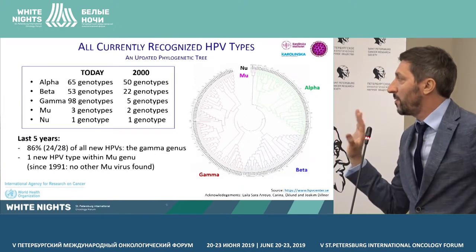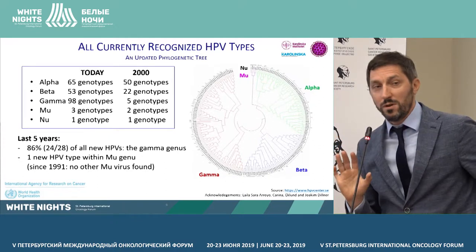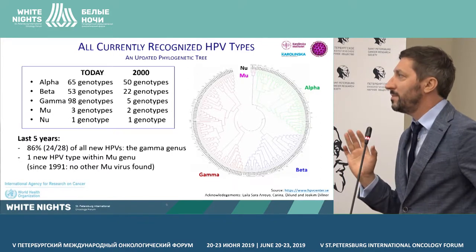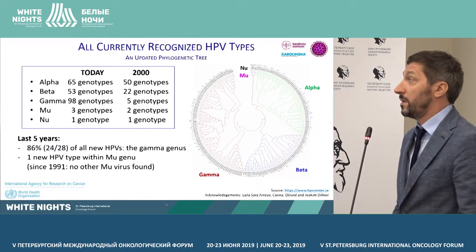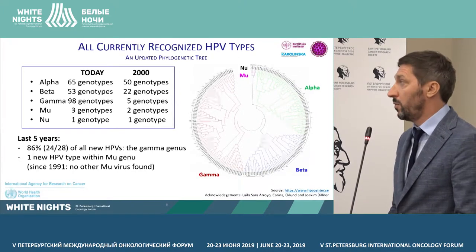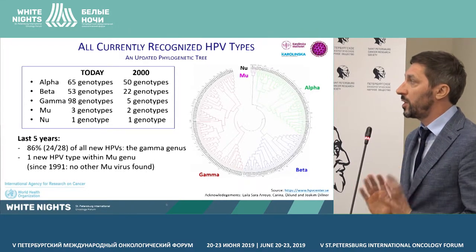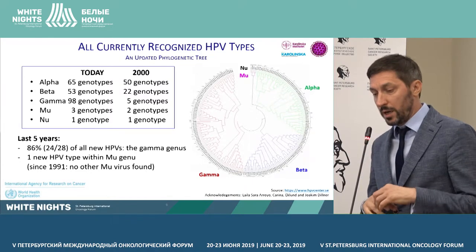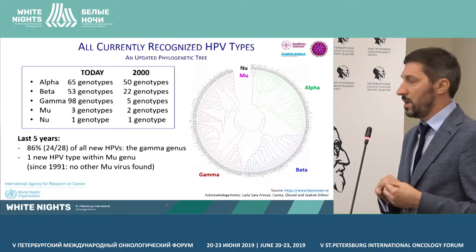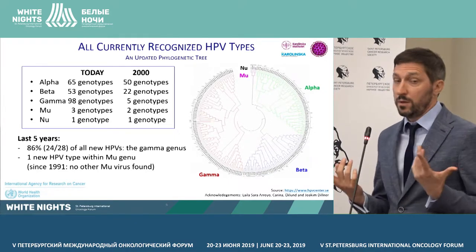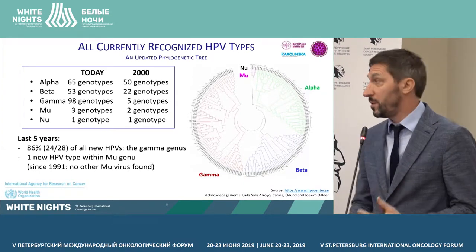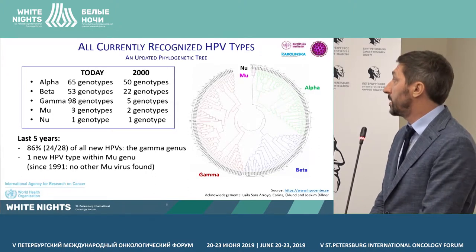You can see the phylogenetic tree for HPV today. Most are cutaneous types. Among the alpha types, there are oncogenic types that cause cancer in people — about 60 of those. The current trend is that practically all newly registered types belong to the gamma group. The only mu type was discovered in 1991, with no new types of that group since.